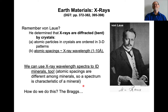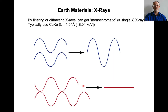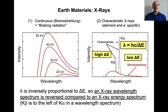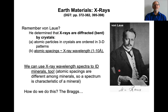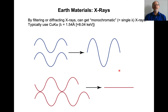The atomic spacings are different among minerals, so you can then use the x-ray wavelength spectrum to identify minerals. And the way that you do this involves the Braggs. If you filter that spectrum so that you get just one x-ray energy — that's important — you have a fixed wavelength x-ray. Typically what we use in x-ray diffractometers is copper K-alpha, which has a wavelength of 1.54 angstroms and corresponds with 8 kiloelectron volts.